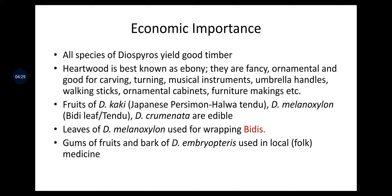The economic importance of Ebenaceae family: all species of Diospyros yield good timber. Heartwood is best known as ebony — fancy, ornamental, good for carving, turning, musical instruments, umbrella handles, walking sticks, ornamental cabinets, furniture making, etc. Fruits of Diospyros kaki (Japanese persimmon or halwa tendu) are edible. Diospyros melanoxylon (bidi leaf or tendu) leaves are used for wrapping bidis. Diospyros chrominata fruits are also edible. Gums of the fruits and bark of Diospyros embryopteris are used in local medicine.